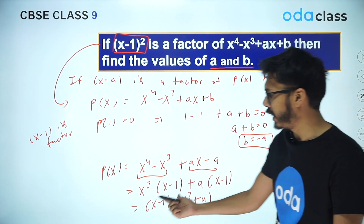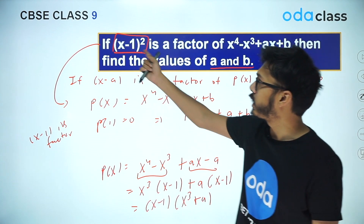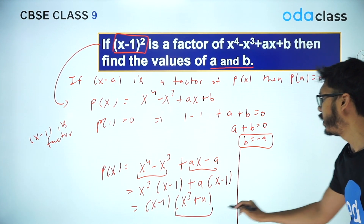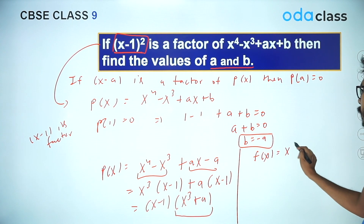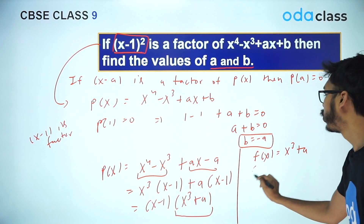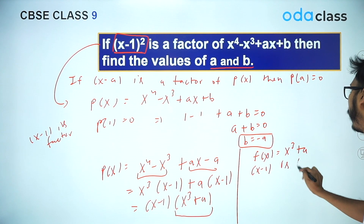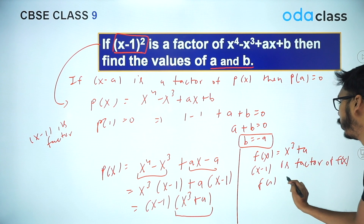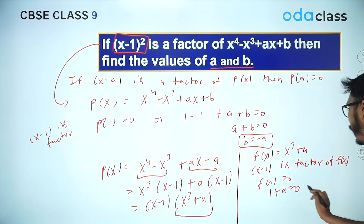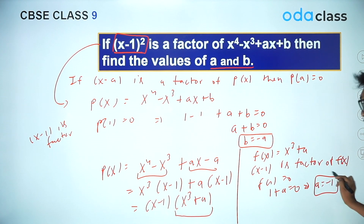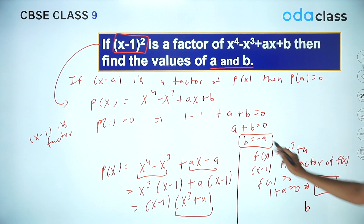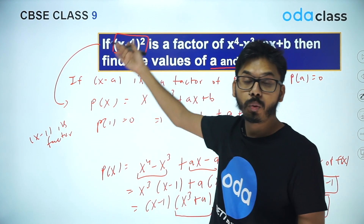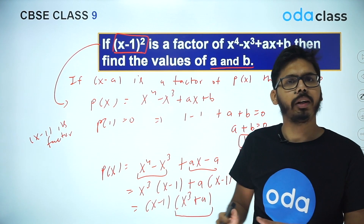We already have (x - 1) as a factor, but the question says (x - 1)² is a factor, so another (x - 1) must come out from (x³ + A). Let F(x) = x³ + A. Since (x - 1) is also a factor of F(x), F(1) = 0, giving 1 + A = 0, so A = -1. Substituting back, B = 1. This is how you find A and B when (x - 1)² is a factor of a polynomial.